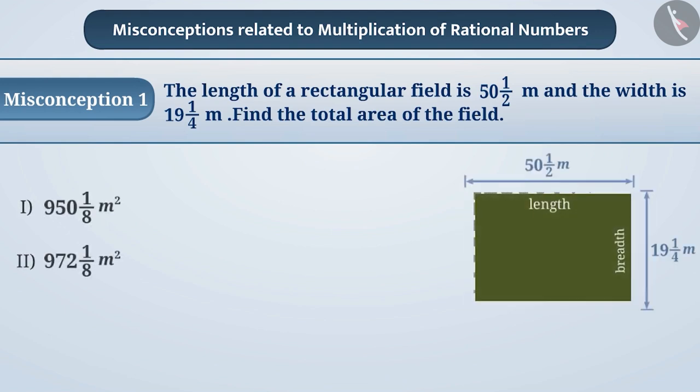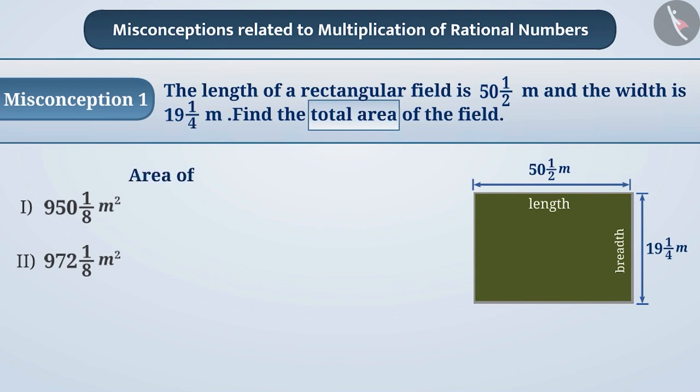Here, we will have to find the total area of the rectangular field. Area of the rectangle is equal to length into breadth, which is equal to 50½ into 19¼ meter square.